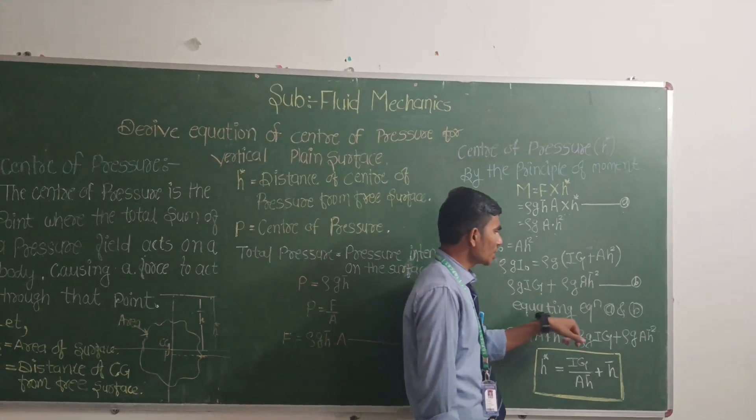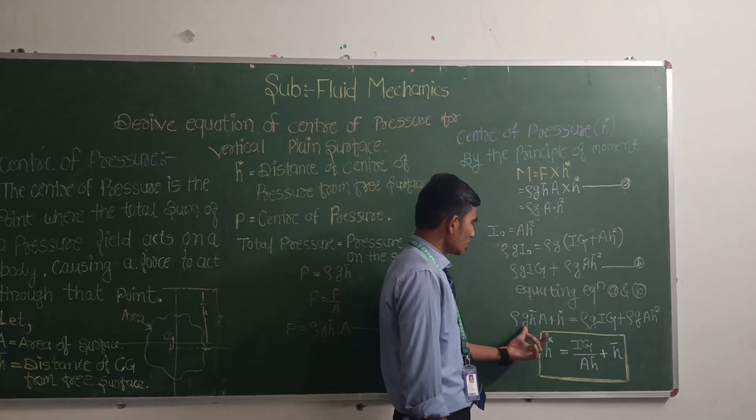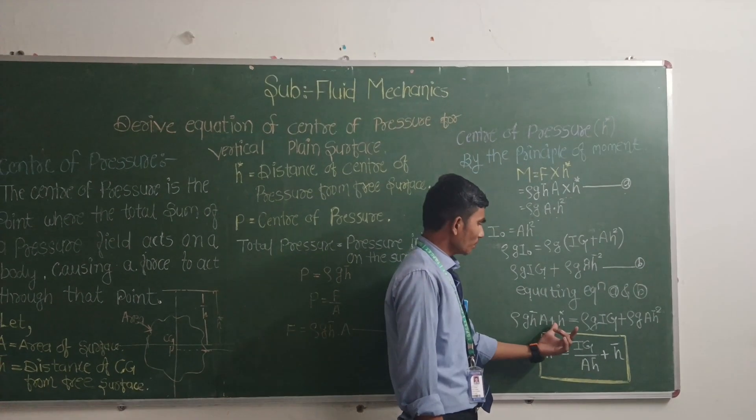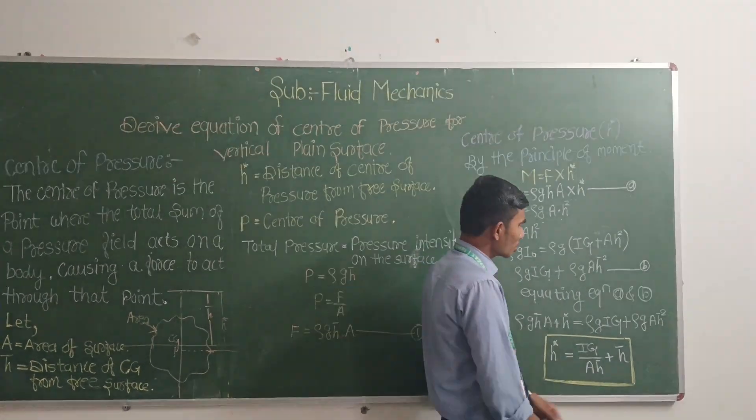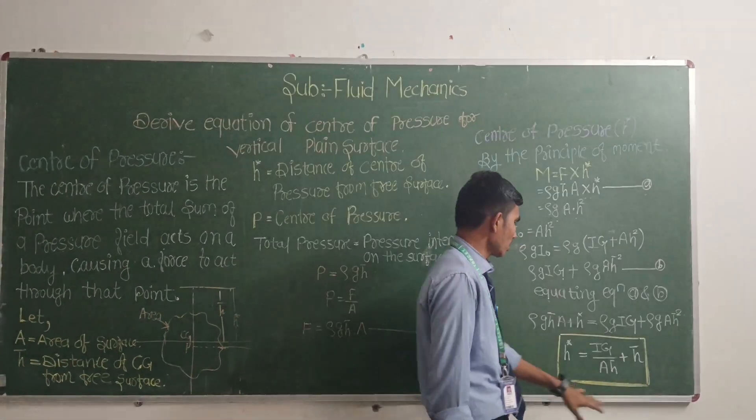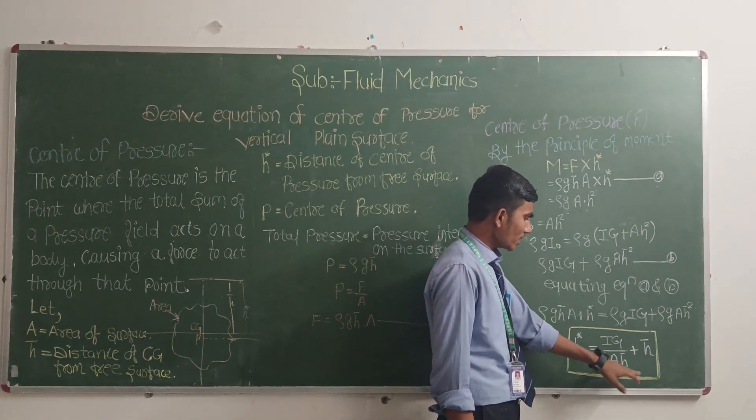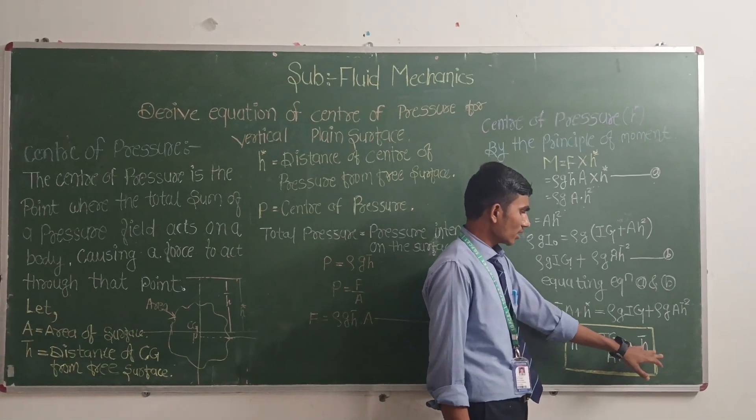By the equation, we get rho into G into H-square A, I-z plus H-star is equal to rho into G plus I-z plus rho into G plus S-square. H-star is equal to I-z upon A into H-bar plus H-bar.